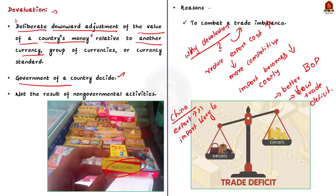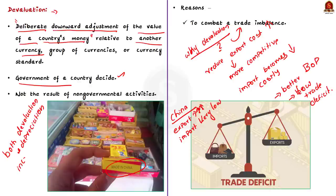This advantage is not limited to deliberate devaluation. When a currency depreciates due to market forces, the exports from the country will also become cheaper and imports will become costlier. So when a currency depreciates, its trade deficit will also come down and the balance of payments position will improve. I hope you understand the difference between devaluation and depreciation, and their relation to exports and trade deficit.